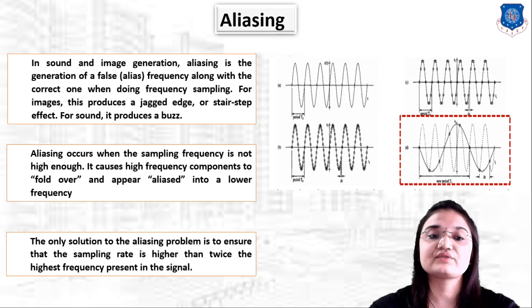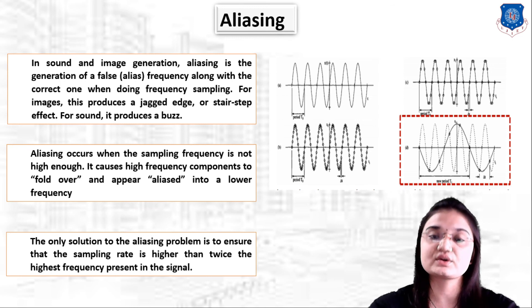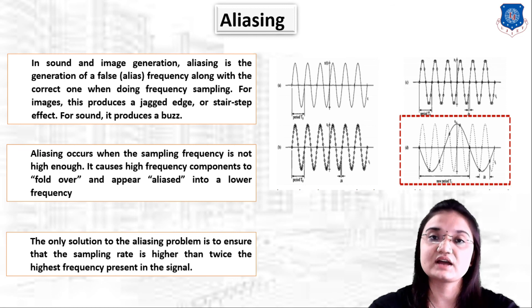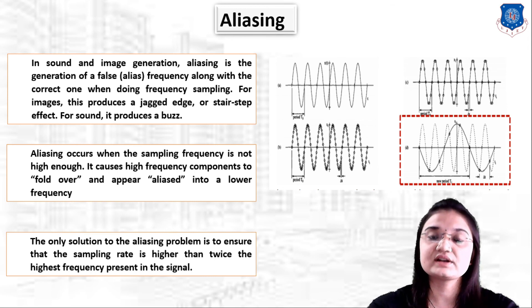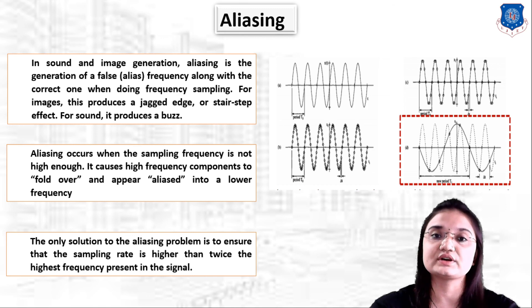This is the most common effect that occurs during frequency sampling in sound and image generation. Aliasing is the generation of false frequency along with the correct one. In this lecture we studied what is frequency domain and how we can analyze signals in the frequency domain, the purpose of frequency domain, converting time domain signals using Fourier transform, and the use of the discrete Fourier transform. Thank you for watching this video.